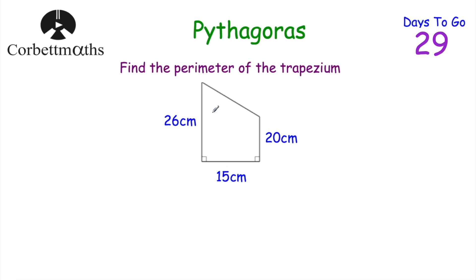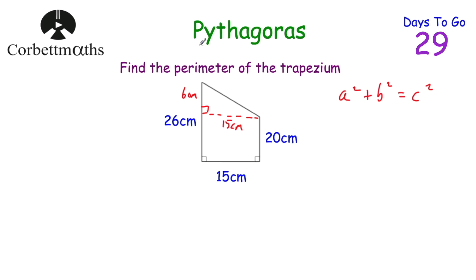To find the length of that diagonal side, we can draw a horizontal line across the trapezium, which creates a right-angled triangle at the top. The base of that right-angled triangle is 15 centimetres. For the height: since the bottom is 26 cm and the top is 20 cm, the extra bit going from the top corner to the bottom is 6 centimetres. So we have a right-angled triangle with shorter sides 6 cm and 15 cm, and we can use Pythagoras's theorem to find the diagonal. Label sides A, B, and C: A squared is 6 squared, B squared is 15 squared, equals C squared.